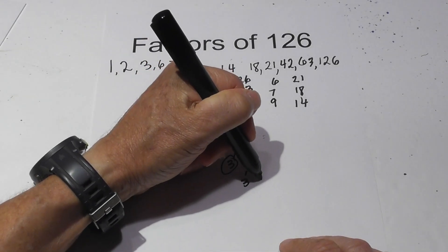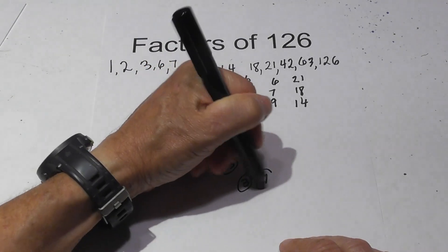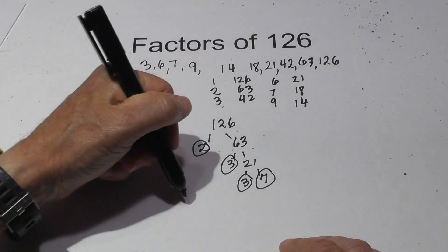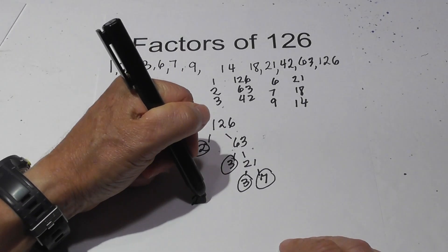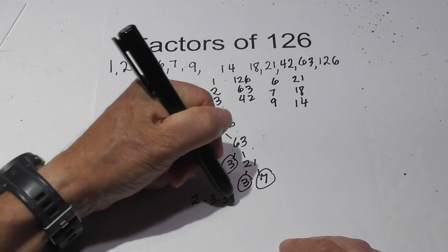And then 3 times 7. Circle both of these because they are prime. So the prime factors of 126 are 2 times 3 times 3 times 7, or 2 times 3 squared times 7.